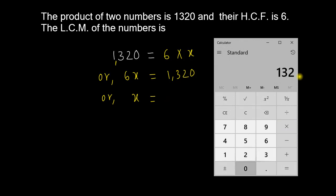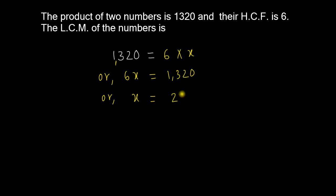1320 divided by 6 equals 220. So the least common multiple is 220. That is the correct answer.